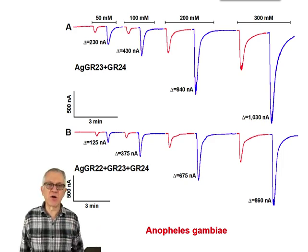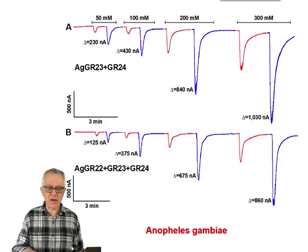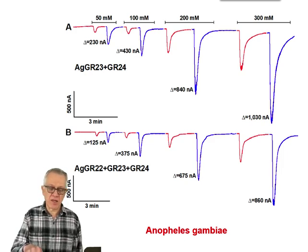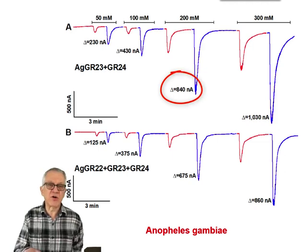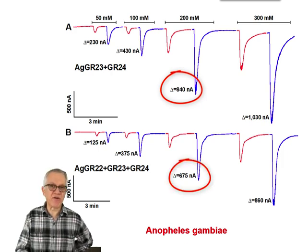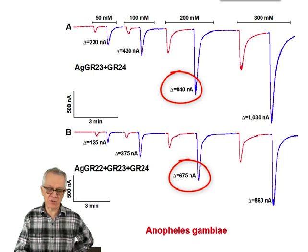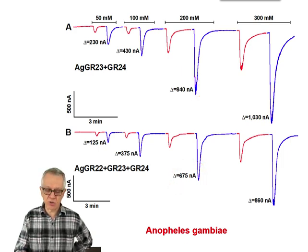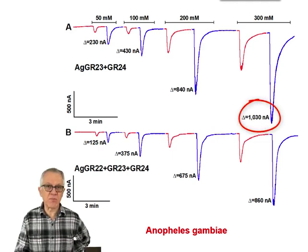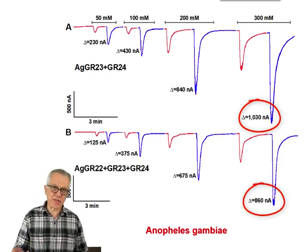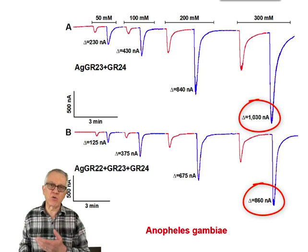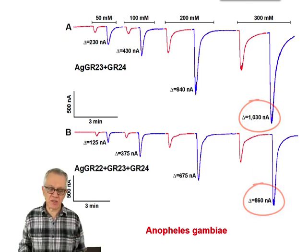We did the same experiment using the equivalent combination — AgGR23 and AgGR24 as the binary receptor, compared to AgGR22, 23, and 24 as the ternary. The top trace is the response to the binary and the bottom trace to the ternary receptor. For 200 millimolar sodium bicarbonate, the binary response was 840 nanoamps versus 675 nanoamps for the ternary. For 300 millimolar, the response was 1030 nanoamps for the binary and 806 for the ternary. Consistently, a lower response is obtained when GR22 is also in the system.